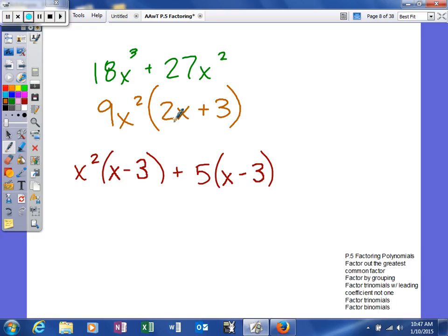Good. Moving right along. Another thing you can always do, it always checks. If you're ever factoring and you don't know if you got the right answer, just multiply these two things together to get this. Multiply those two things together to get this.